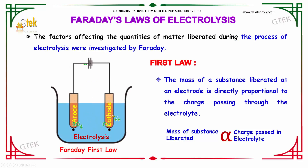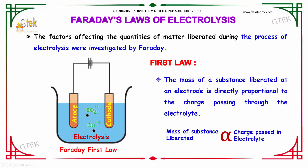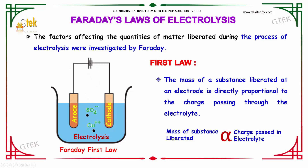Based on the electricity generated between the electrode and through the process of electrolysis, Faraday derived some laws. The facts affecting the quantities of matter liberated during the process of electrolysis were investigated by the great physicist Faraday. This is the first law: the mass of the substance liberated is directly proportional to the charge passed in the electrolyte.